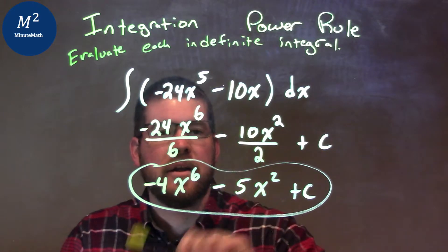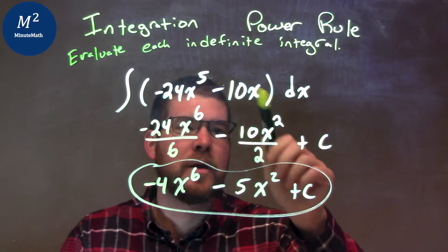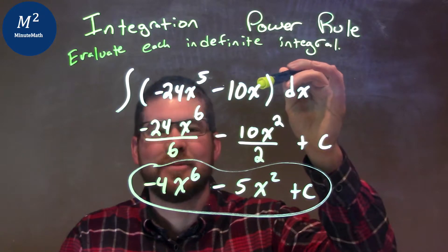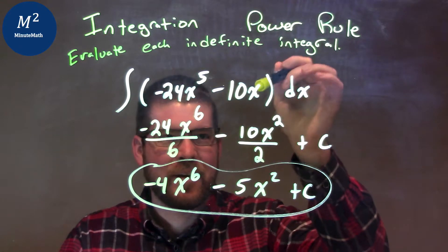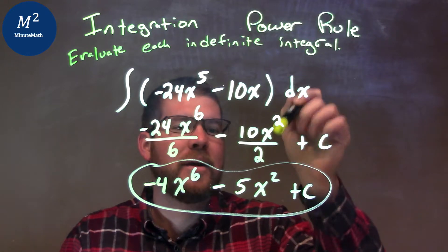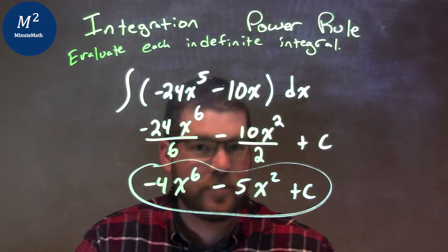So 6 up here and 6 down here. Minus that, well, 10x squared—right, or sorry, 10x. We add that exponent by 1 as well. We get the second one now. So that's the second power, and then divide it by that 2 as well, and we don't forget our plus C.